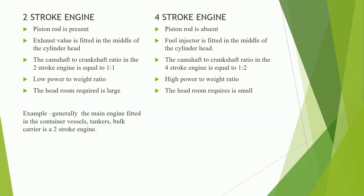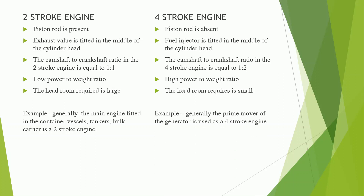Examples: the main engine fitted in container vessels, tankers, and bulk carriers is generally a 2 stroke engine, as 2 stroke engines produce more torque which helps to propel the ship, and they are generally slow speed marine engines. The example of the 4 stroke engine is the prime mover of the generator, which is generally a 4 stroke engine.